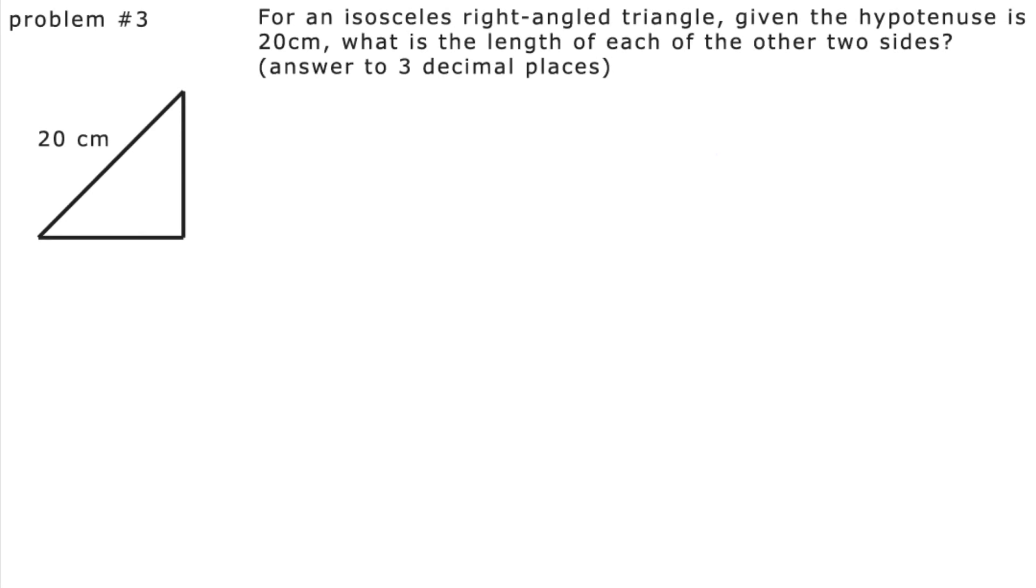Problem number three. For an isosceles right-angled triangle, given that the hypotenuse is 20 cm, what is the length of each of the other two sides? Answer to three decimal places. Well, let's let the length of the equal sides be x cm.